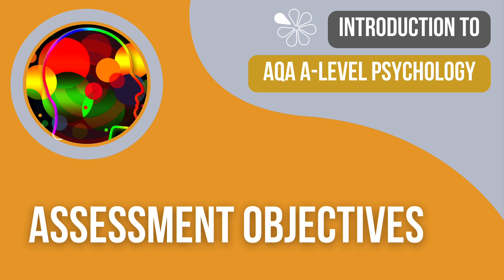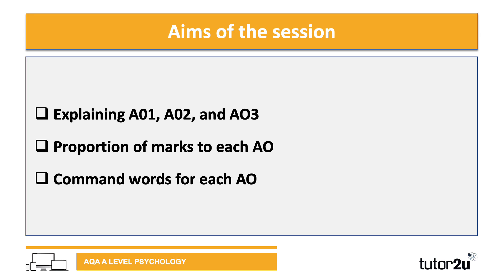Welcome to the first session of the introduction to AQA A-level psychology. In this session we're going to be covering the assessment objectives for AQA psychology. We're going to be looking at explaining and describing what the AO1, AO2 and AO3 assessment objectives are, the proportion of marks for each assessment objective, and also identifying the command words in terms of exam questioning for each assessment objective.